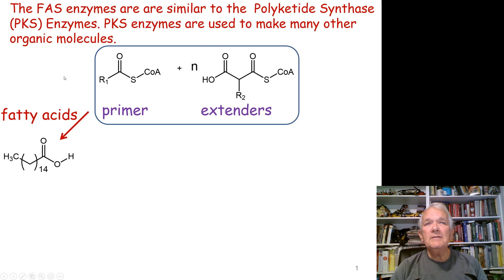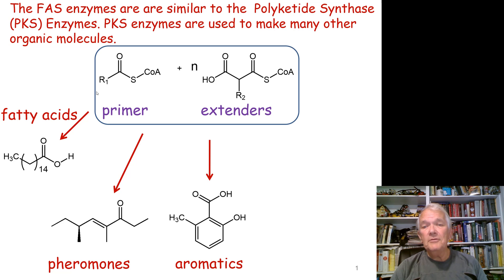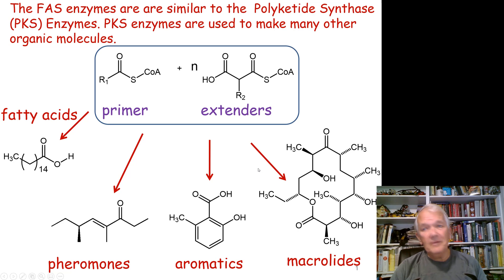These polyketide synthase enzymes are used to make all kinds of interesting molecules. They're used to make insect pheromones, various aromatics, and macrolides — those are the three groups we're going to discuss. The aromatics are made by lots of plants and other creatures, the macrolides tend to be made by bacteria, and the pheromones we're going to address are those used by insects.